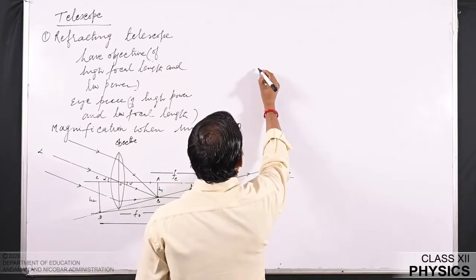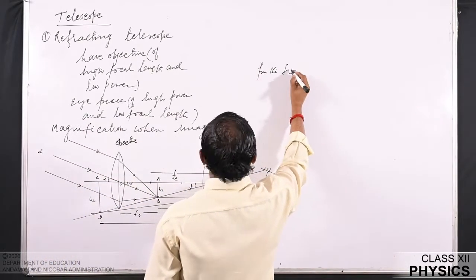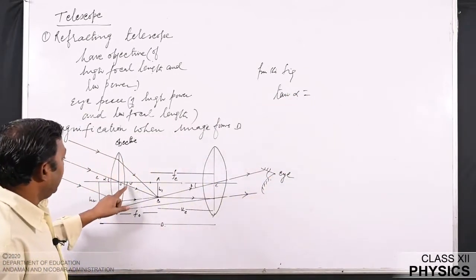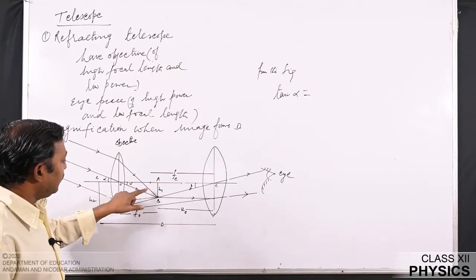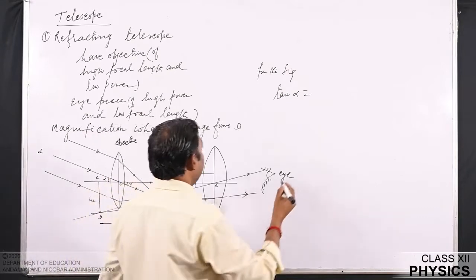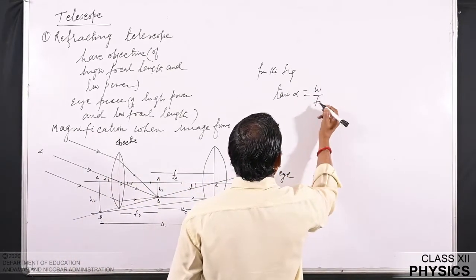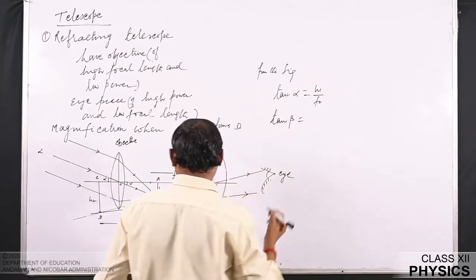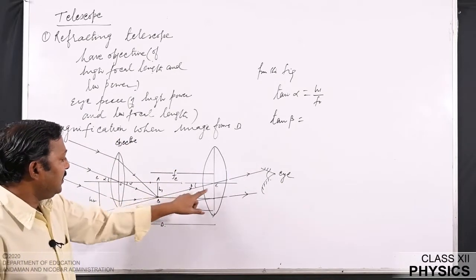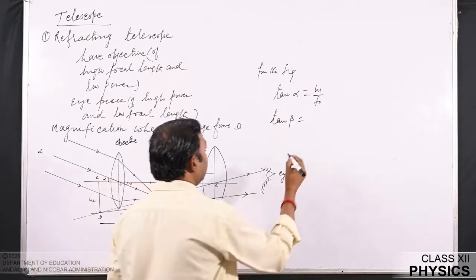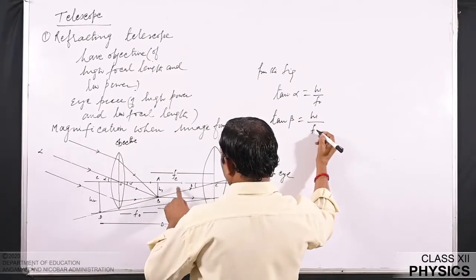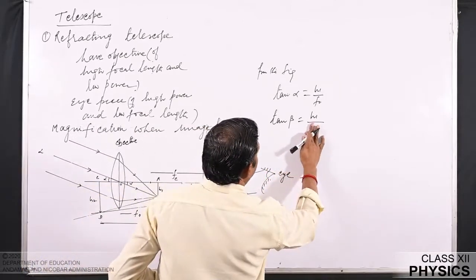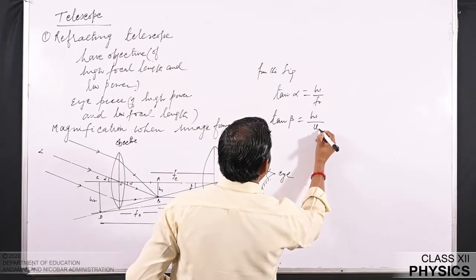From the figure, in triangle OAB, tan α = H1/F₀. So tan α can be written as H1/F₀. Similarly, tan β from triangle AEB is given by tan β = H1/Uₑ.